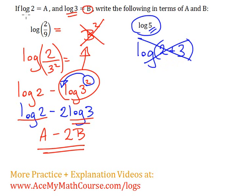So far, we only know log 2, right? Log 2 is A, log 3 is B. Another thing that we actually know is that log 10 is equal to 1.